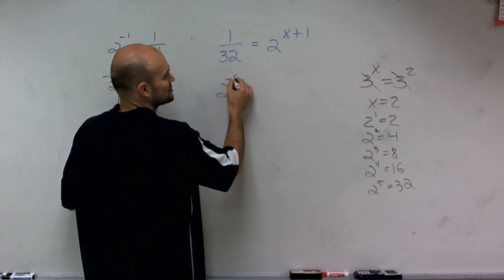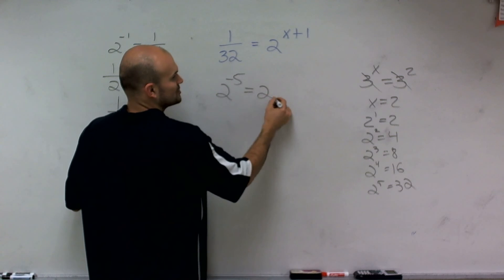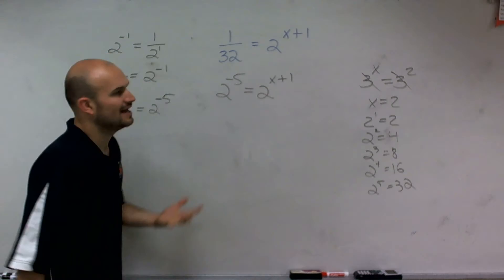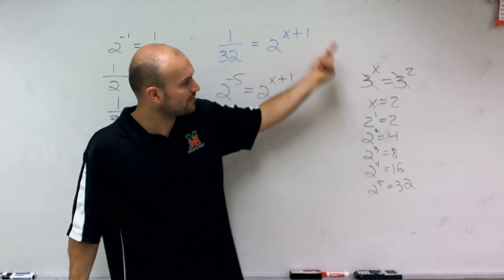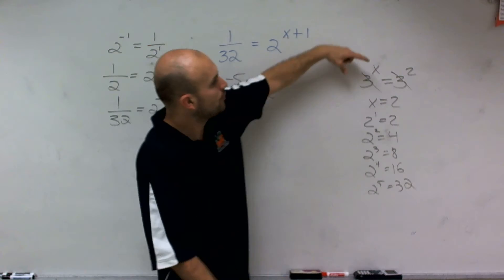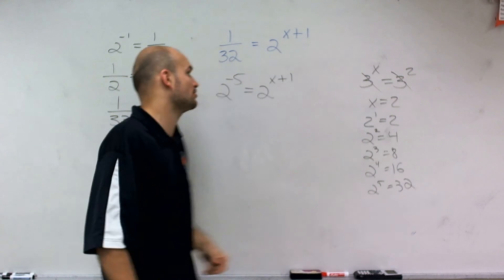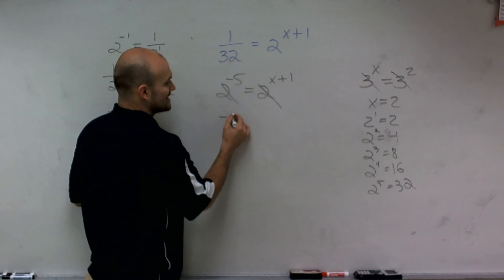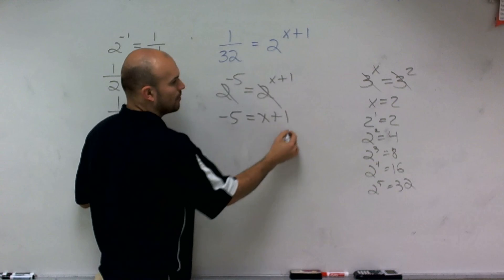So now I can rewrite this as 2 to the negative fifth equals 2 to the x plus 1. And just like my example over here, when I have the bases are exactly the same and I have an exponent equal to another exponent, we now know that my exponents are going to be equal. So therefore, I can now say negative 5 equals x plus 1.